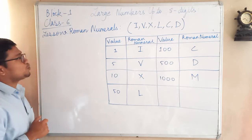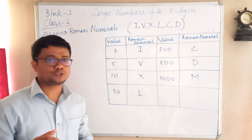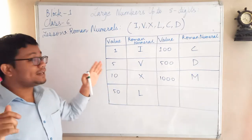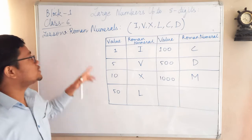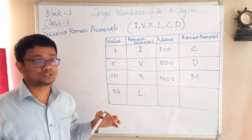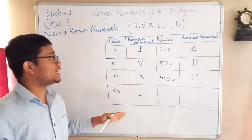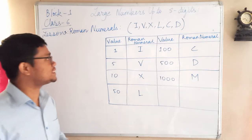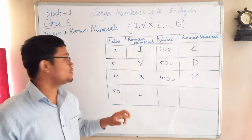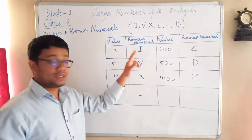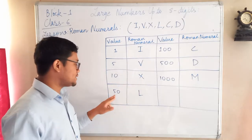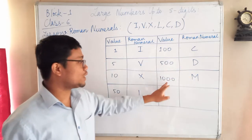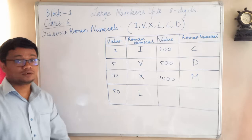Now let us try to understand what Roman numerals actually are. Roman numerals were used by an empire — there is a place in the world, which you have to find by yourself. Those people used Roman numbers; there was a big empire known as the Roman Empire, where this number system was discovered. In their system: one is represented by I, five by V, ten by X, fifty by L, one hundred by C, five hundred by D, and one thousand by M.